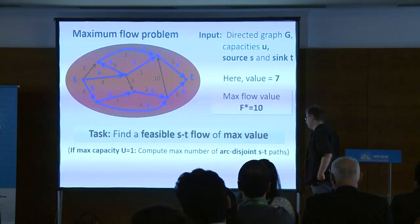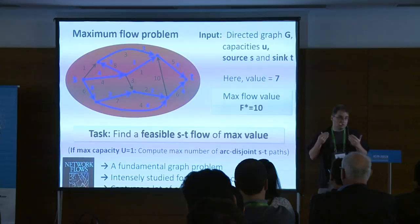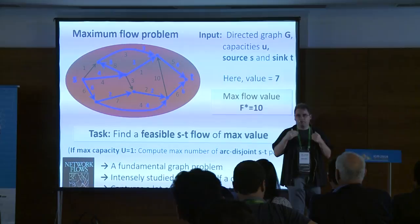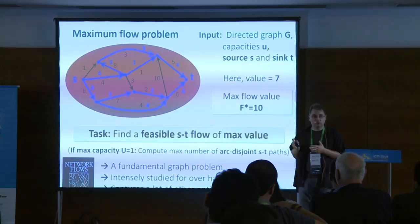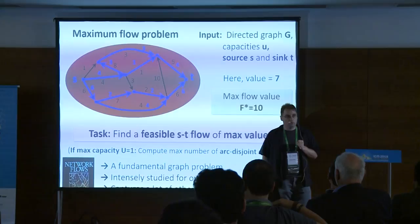Why do we care about this problem? The short answer is that it's one of the most fundamental questions in graph algorithms, for two reasons. First, it abstracts many real-world optimization problems. Second, it's one of the most fertile grounds for discovering new algorithmic ideas — things like primal-dual algorithms essentially stemmed from the study of MaxFlow, and many other techniques first appeared in this context. There is now a thick book about just different versions of the MaxFlow problem and different algorithms for it.